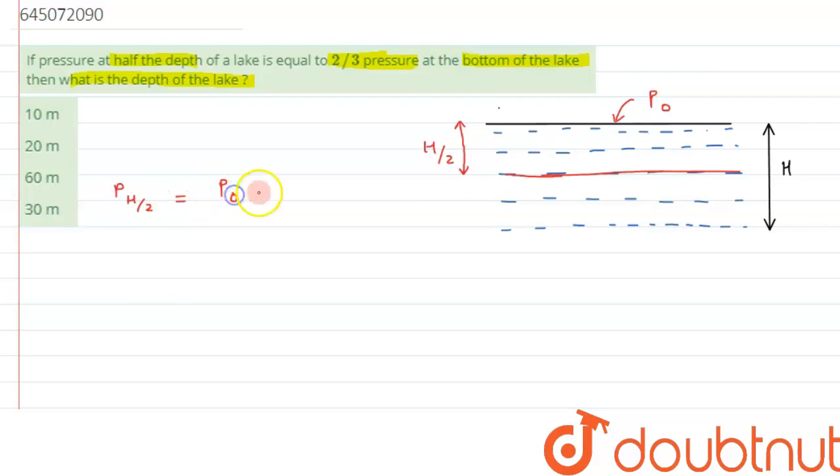So this is the gauge pressure. Gauge pressure means the pressure which is created by the liquid. This is the total pressure on the liquid, and this is the gauge pressure, meaning the pressure which is exerted by the liquid. We have to be careful with that. Let's say this is our equation 1.